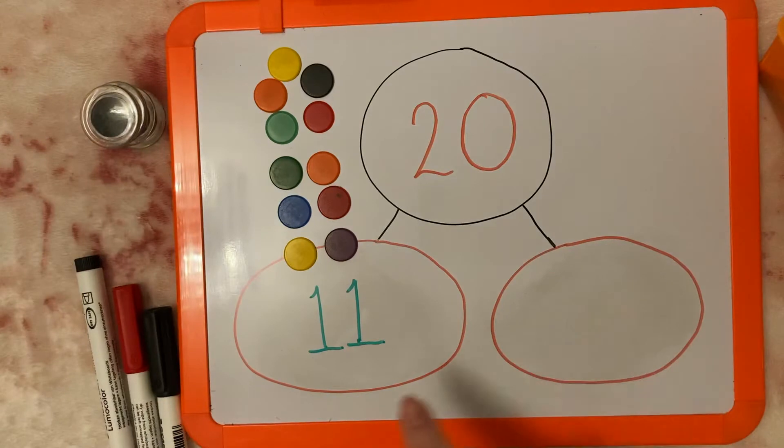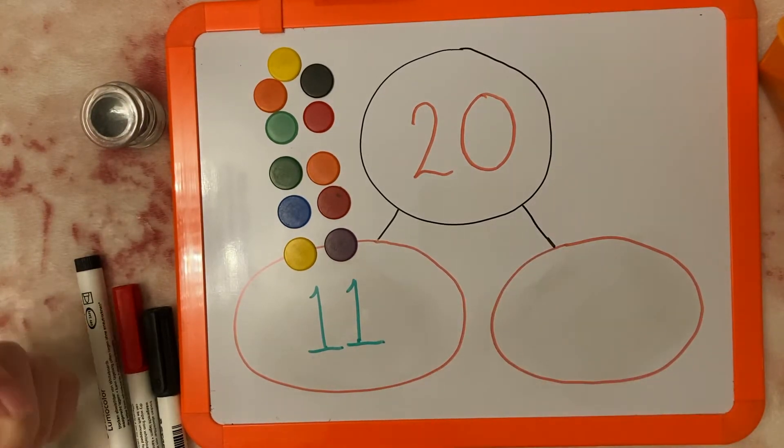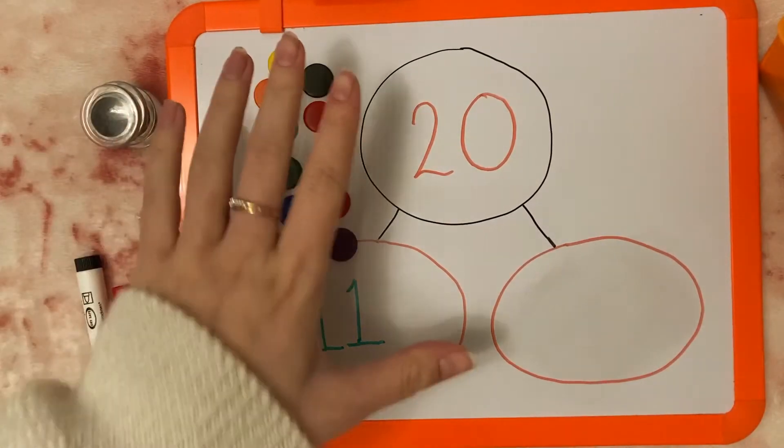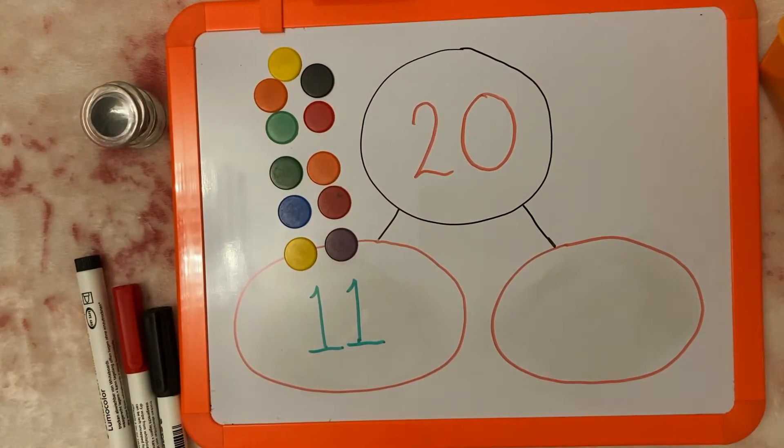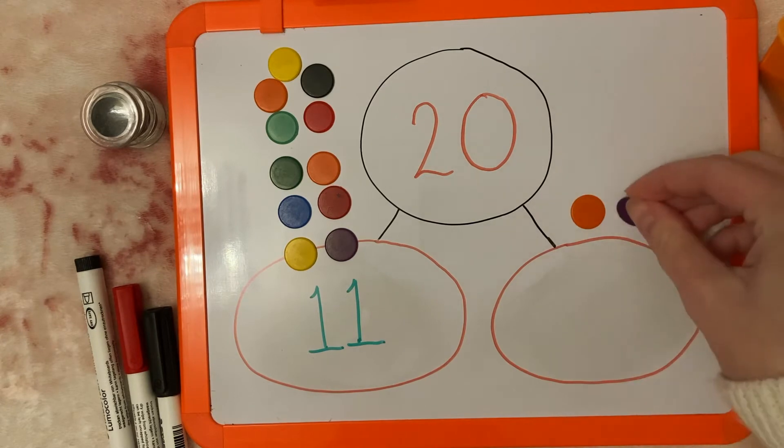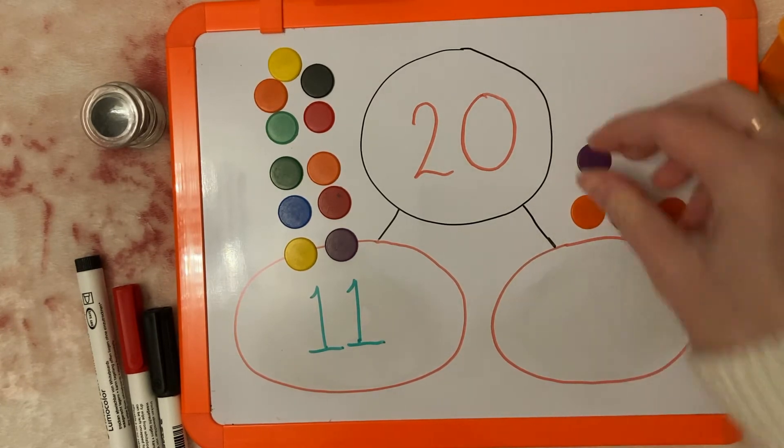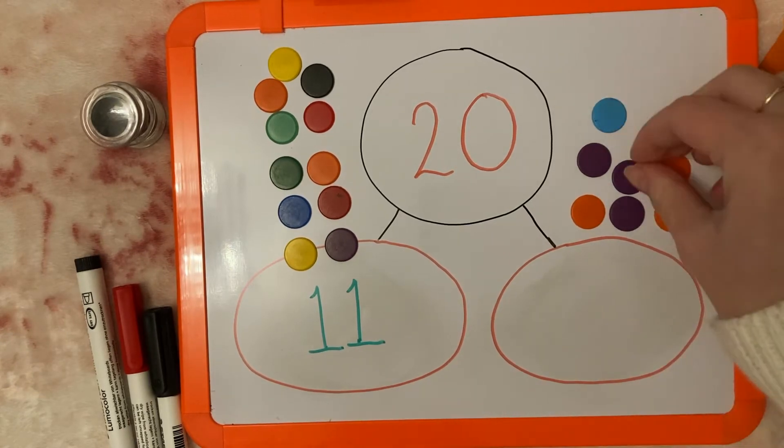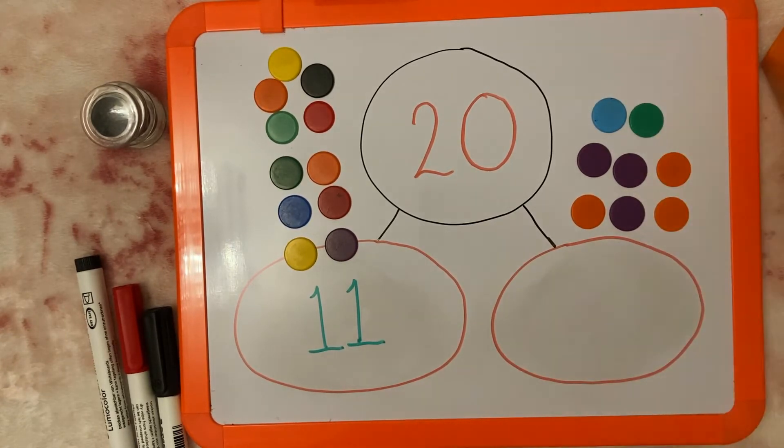We need to work out how many more we need to get to 20. So what I'm going to do, just like last time, is I'm going to count on. So we've got 11 there. I'm going to go 12, 13, 14, 15, 16, 17, 18, 19, 20.